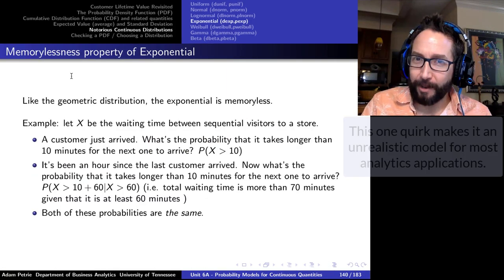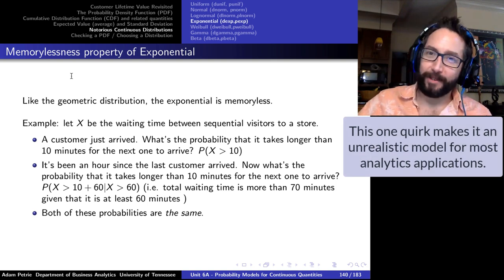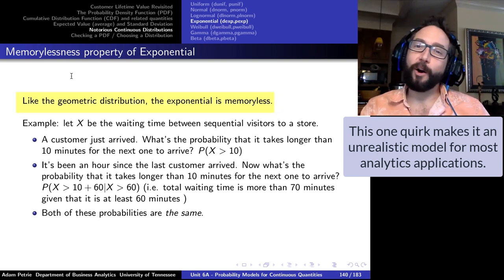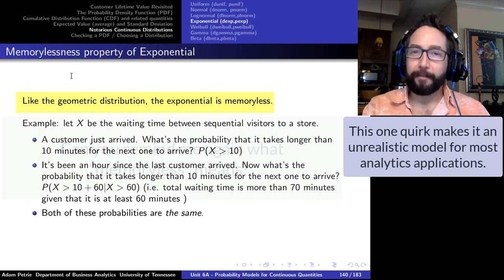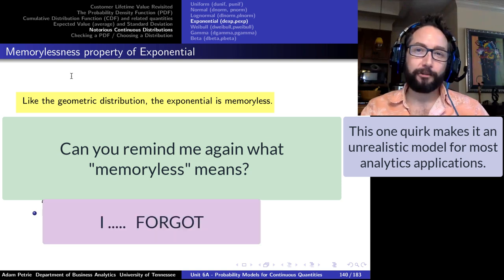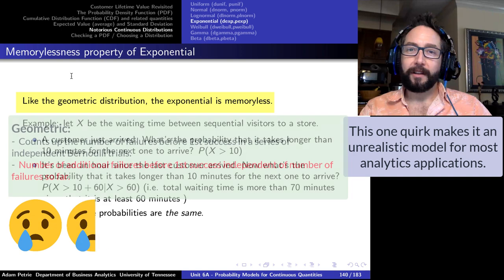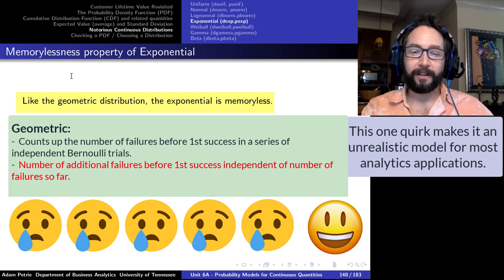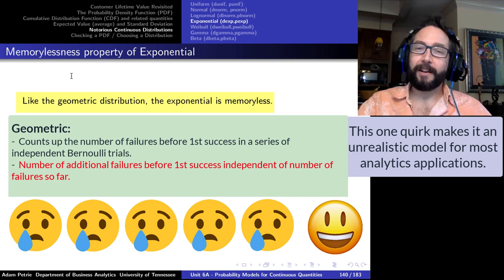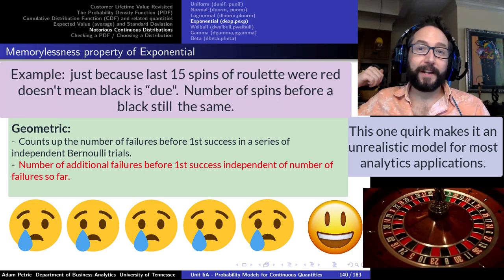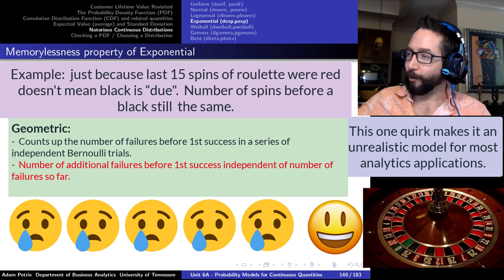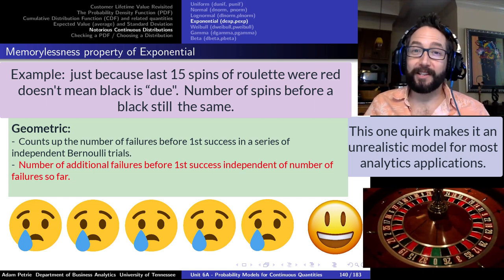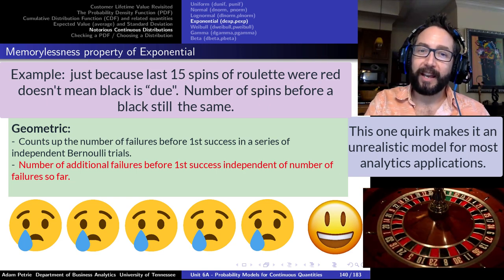One drawback to modeling with an exponential distribution in business analytics is that the exponential is the only continuous distribution that is memoryless. We saw this with the geometric distribution in discrete world: the number of additional trials needed for the first success was independent of how many failures had occurred so far. It didn't matter if we were just starting or had just had 100 failures — the expected number of failures until the first success was the same regardless.